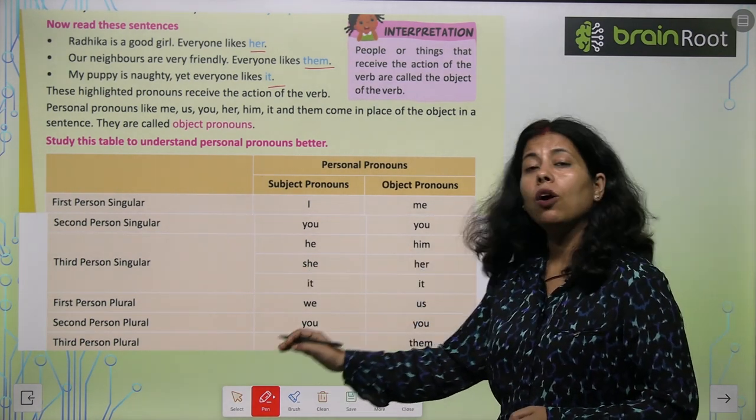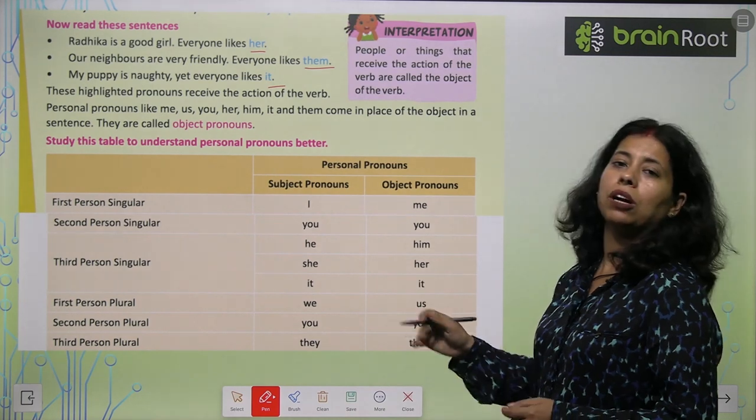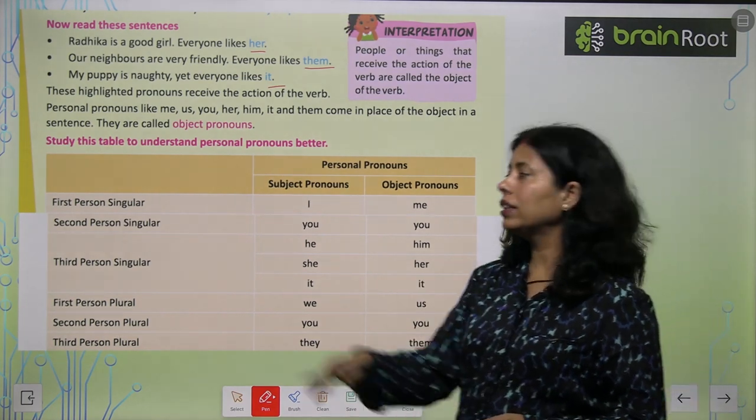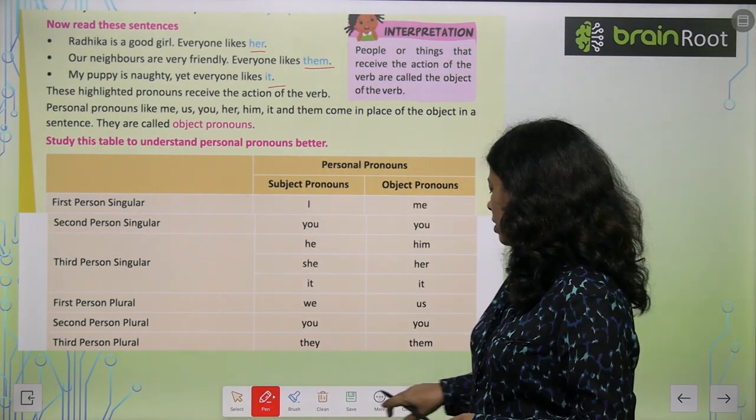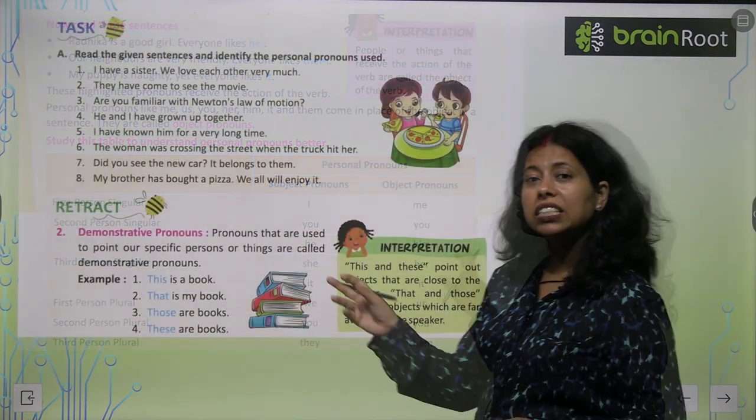First person plural: subject is we, object is us. Second person plural: you and you. Third person plural: subject is they, object is them. This is how you have to use them.